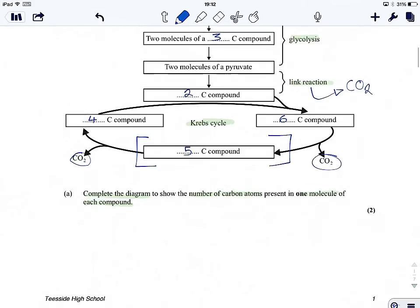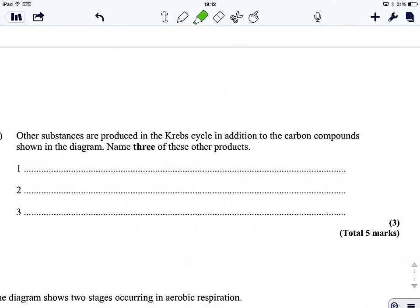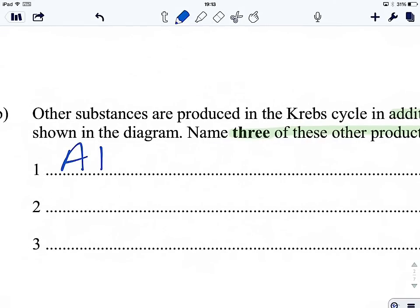So there we go. Let's have a look through. What's our next question? Other substances are produced in addition to the carbon-containing compounds, name three of these other products. Well, we've got ATP, adenosine triphosphate, the energy currency of the cell, which is produced as a result of substrate-level phosphorylation in the Krebs cycle, just adding on phosphate to ADP.